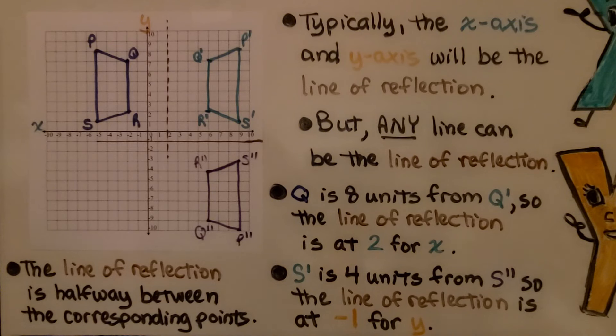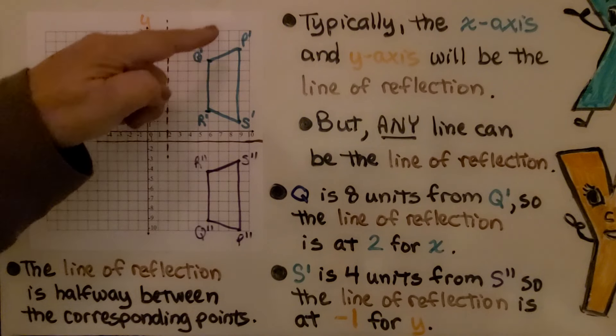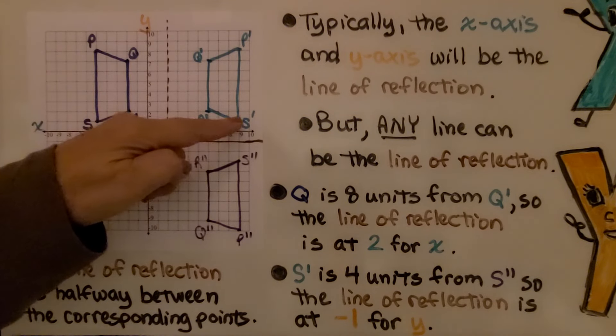Typically, the x-axis and y-axis will be the line of reflection, but any line can be the line of reflection. We have trapezoid PQRS and its reflection P', Q', R', and S'.